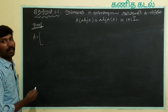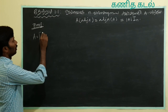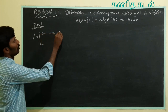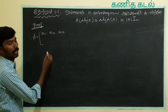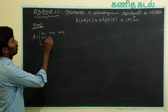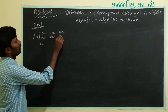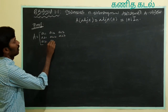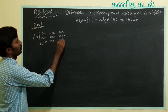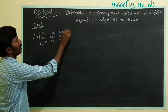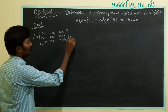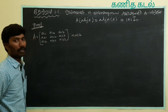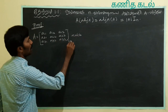What we want to say is: A is a 3 by 3 matrix with elements A11, A12, A13 in the first row; A21, A22, A23 in the second row; and A31, A32, A33 in the third row. That is A 3 by 3.